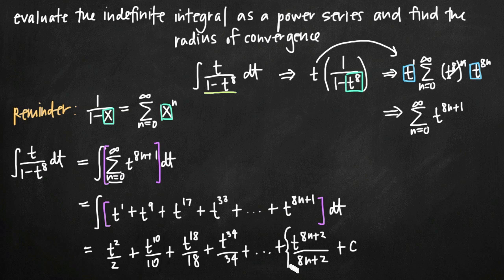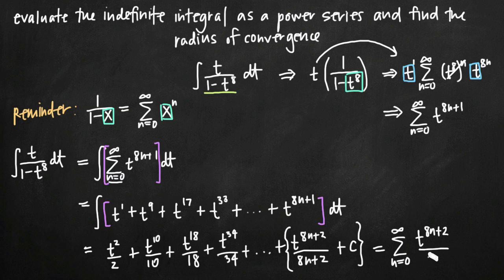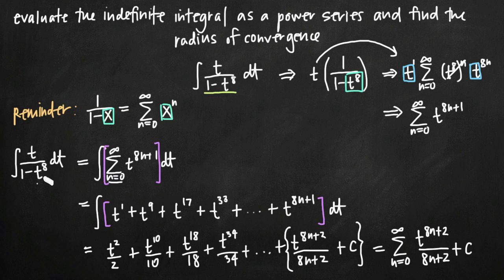All we really need are the general nth term and the constant of integration C. Collapsing this into summation notation, we get the sum from n equals 0 to infinity of t to the 8n plus 2 divided by 8n plus 2, plus C. This infinite sum represents the integral of t divided by 1 minus t to the 8th, expressed as a power series in summation notation.